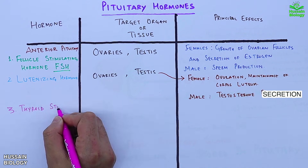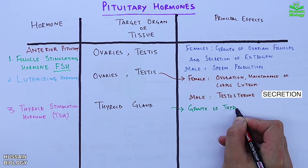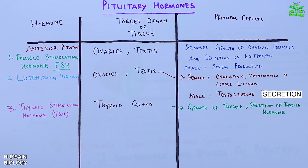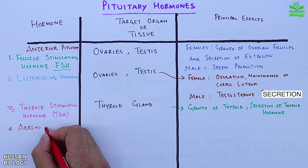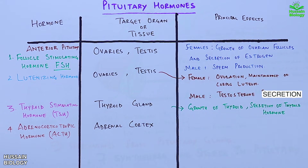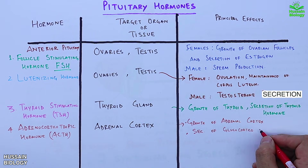The third hormone from the anterior pituitary is thyroid stimulating hormone (TSH). It targets the thyroid gland, and its principal effects include growth of the thyroid and secretion of thyroid hormone. The fourth hormone is adrenocorticotropic hormone (ACTH). It targets the adrenal cortex, and its principal effects include growth of the adrenal cortex and secretion of glucocorticoids.